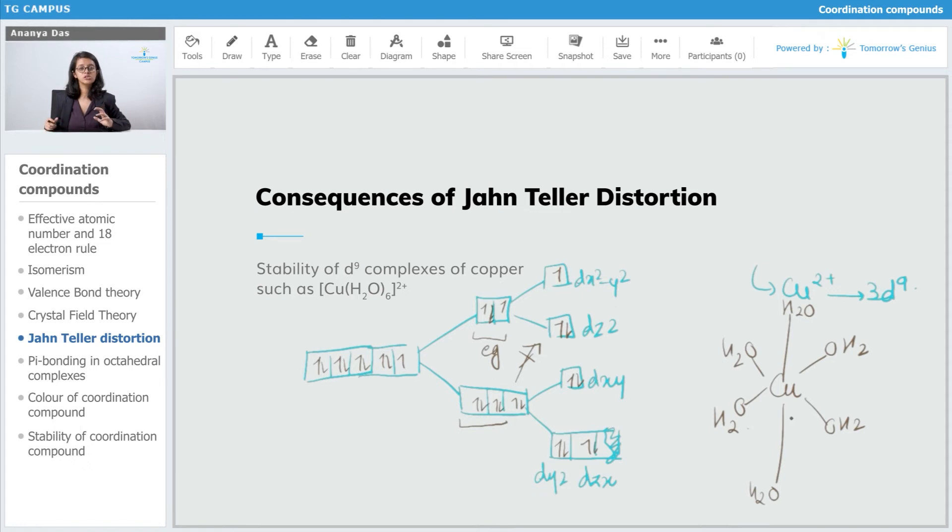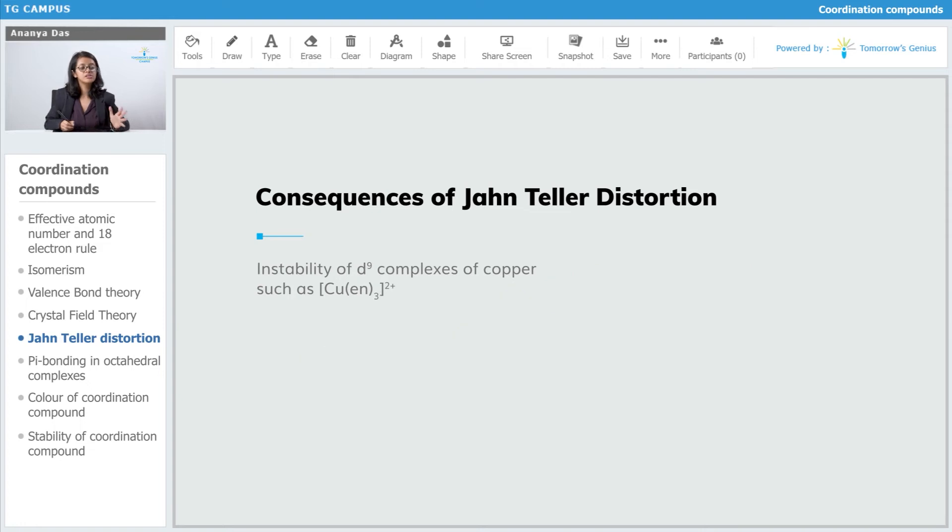But Jahn-Teller distortion is not only a good thing, it has some bad aspects too. That is, it gives instability to some complexes also. For example, this complex, again in this complex the copper is present as 3d9 because it is Cu 2+. So it is present as 3d9, 3d9 means it is going to undergo JTD. And if it is going to undergo JTD, first of all what did it look like? If there was no JTD, we assume that there is no JTD, then it would have looked like this.